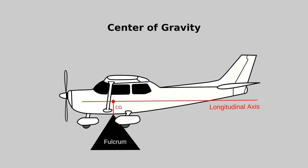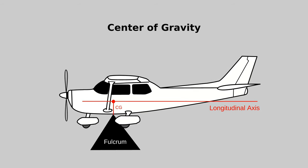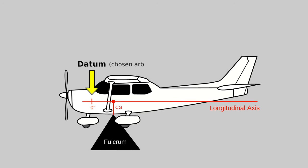To do calculations for the center of gravity, we have to put numbers on the longitudinal axis and decide where the zero point is going to be. For Cessna 172s and a lot of other aircraft, the zero point, also referred to as the datum, is placed near the aircraft firewall and then we measure away from it in inches.